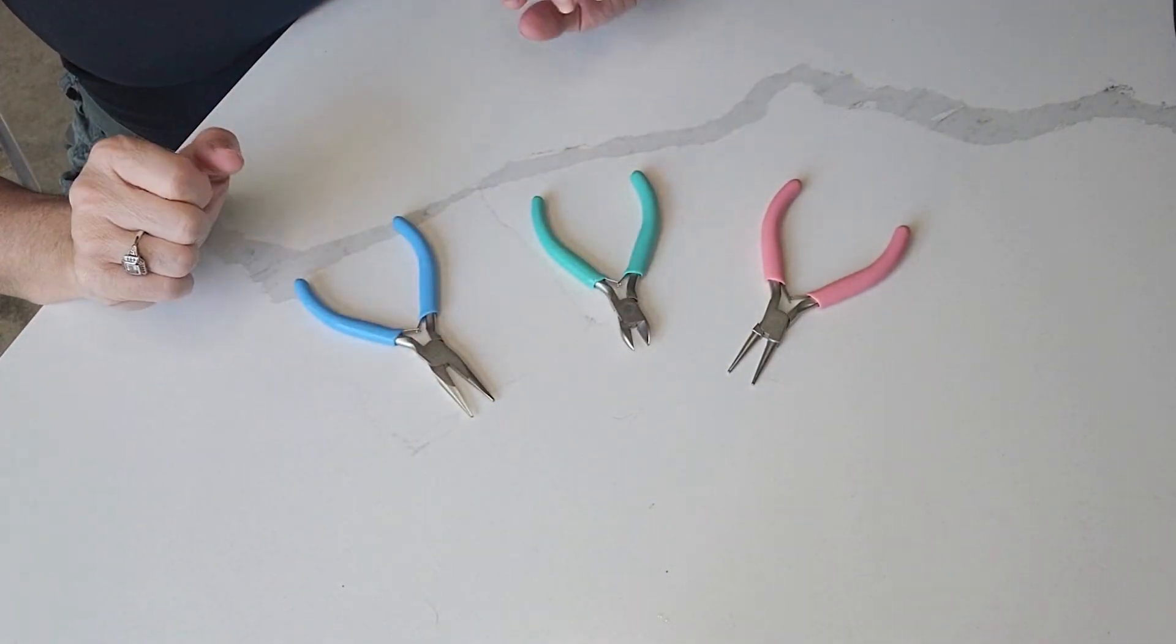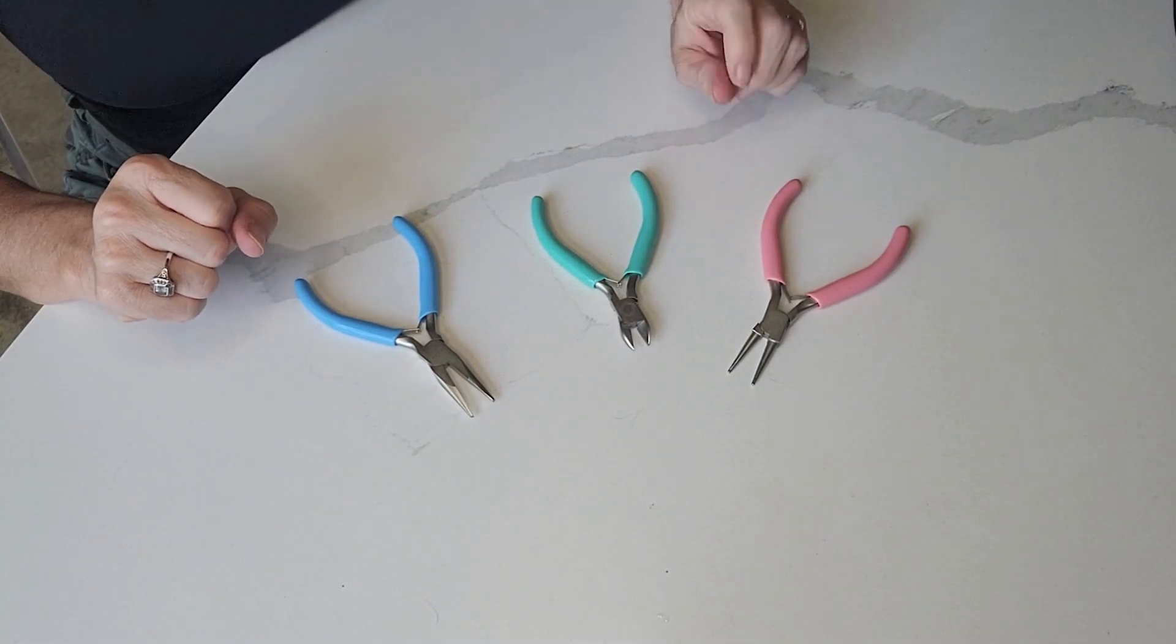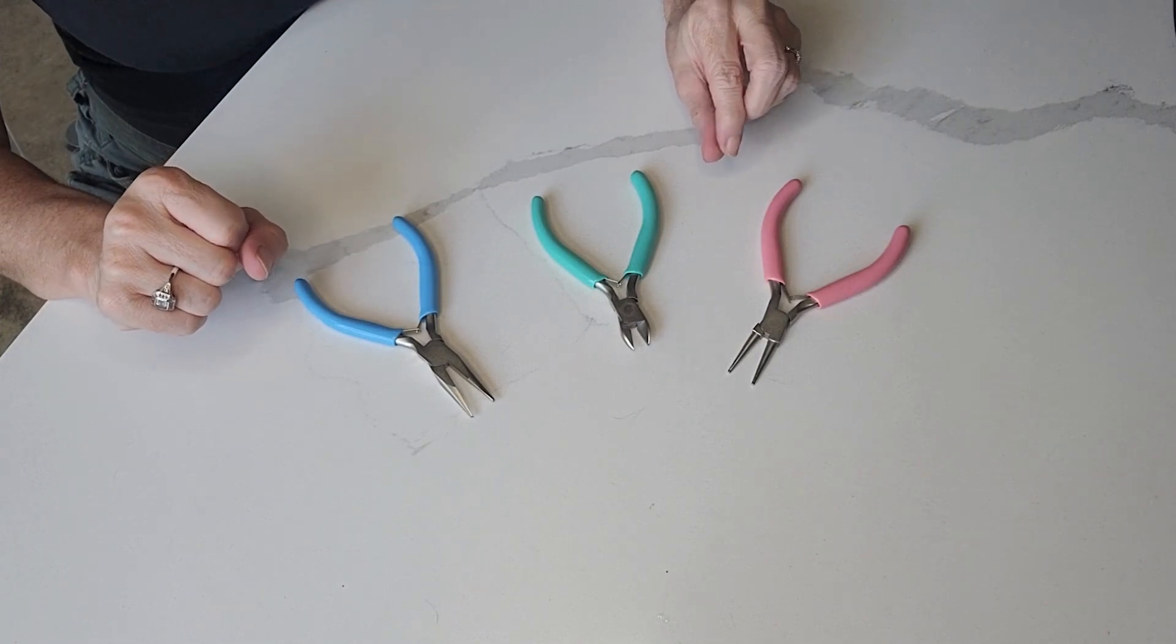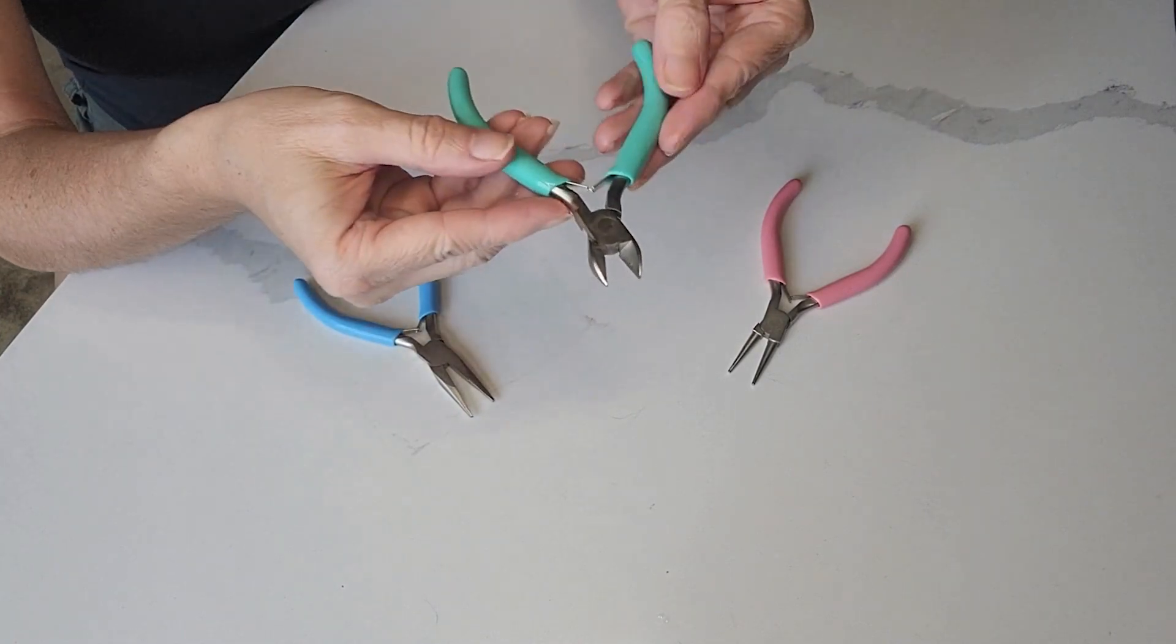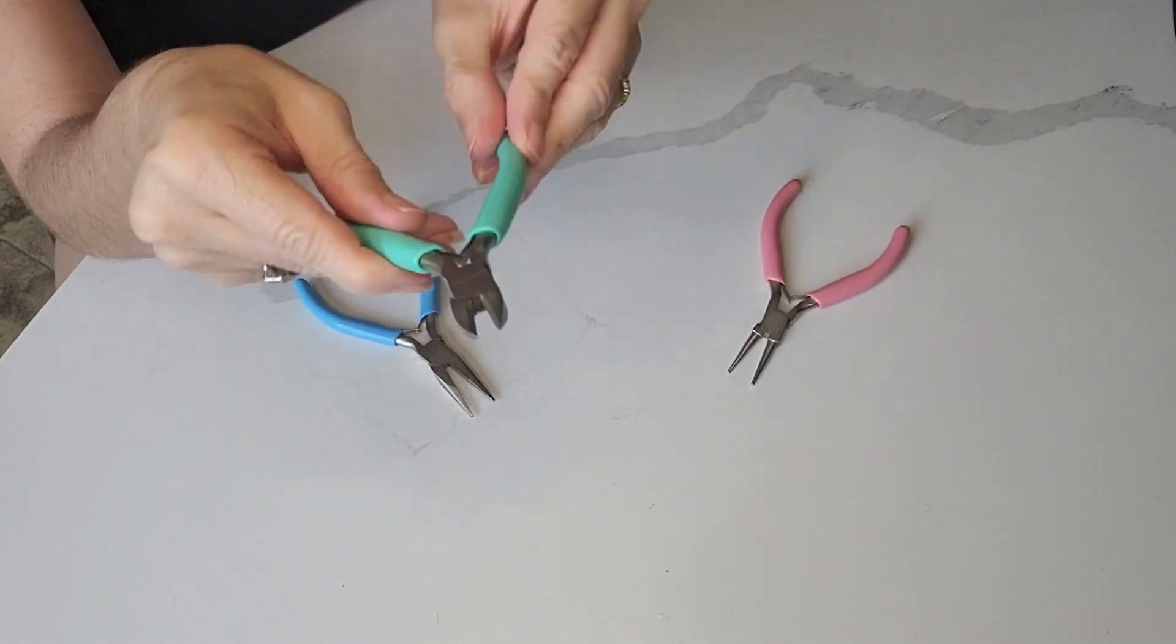The three pieces has the five inch chain nose which is good for bending, crimping, opening and closing jump rings. The five inch round nose which is good for bending and twisting wires and the green wire cutters which is really perfect for smooth, flat and really clean cuts.